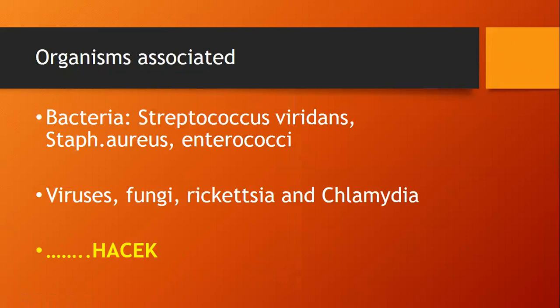HACEK stands for: H — Haemophilus species; A — Aggregatibacter; C — Cardiobacterium; E — Eikenella corrodens; K — Kingella kingae. These are important periodontal bacteria also found in infective endocarditis. HACEK is a very important viva/theory question.